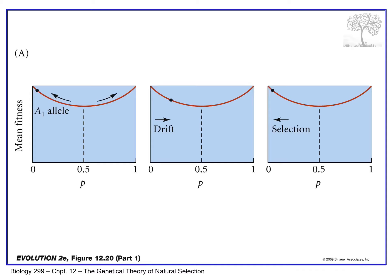If a population has a low frequency of A1 and is near one adaptive peak, there is no way A1 frequency could increase enough to reach the other peak, because it would have to cross the adaptive valley — becoming less fit — only to then become more fit. If it shifts due to drift but doesn't reach the unstable equilibrium point, selection will force it back up toward the original peak.